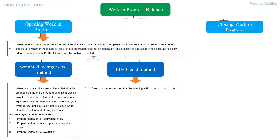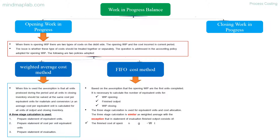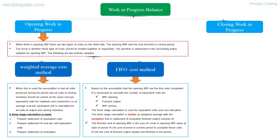The FIFO cost method is based on the assumption that opening WIP units are the first units completed. It is necessary to calculate the number of equivalent units for opening WIP, finished output, and closing WIP. The three-stage calculation is similar to weighted average, except that in the statement of valuation, finished output consists of the finished cost of opening WIP — being the sum of costs in opening WIP valued at the start of period, plus costs incurred in the current period to complete those units, plus the cost of output started and finished in the period.